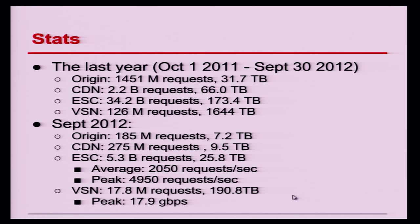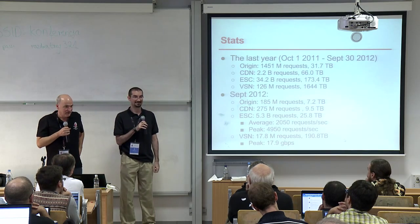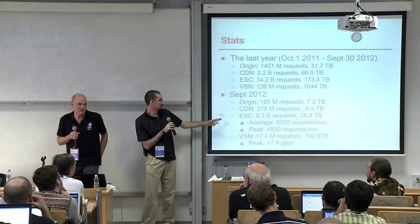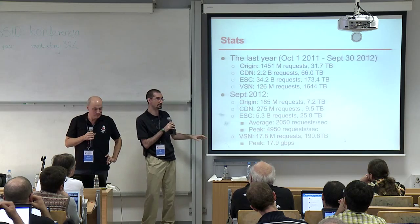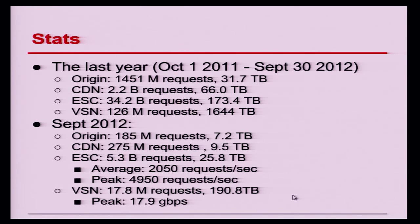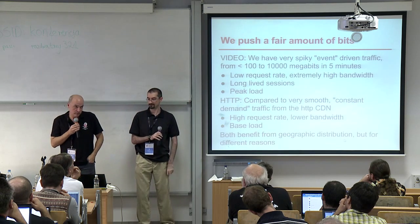A little bit of stats: in September we uploaded about 200 terabytes to the internet, and at peak time that was about 18 gigabits per second. Our Varnish serves about six billion requests this month, and at peak time that's as many as 5,000 requests per second spread across different geo zones. As everyone knows, Varnish can do that with its eyes closed on one box — the challenge is actually locating it around the world. So yeah, we push a fair amount of bits.